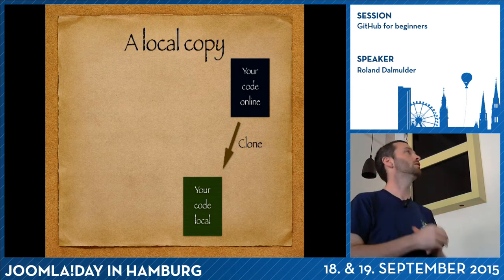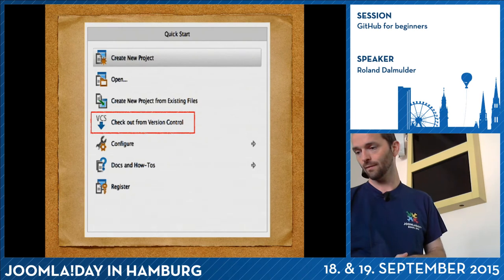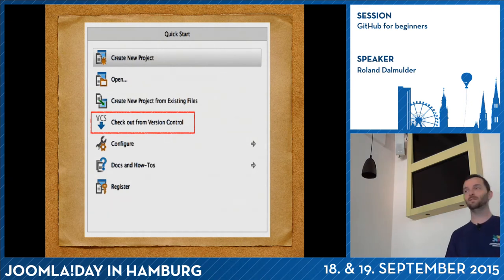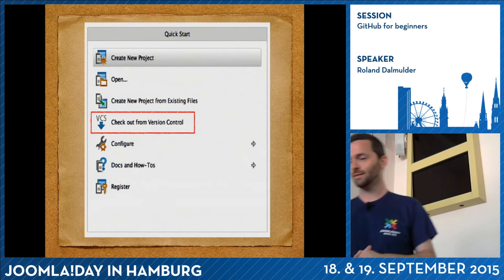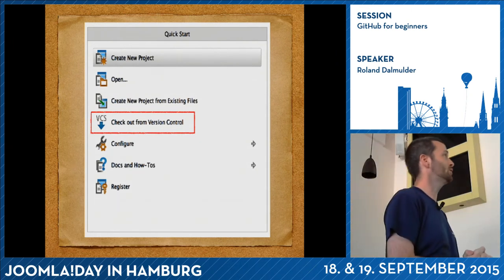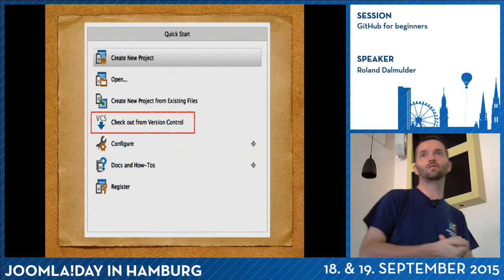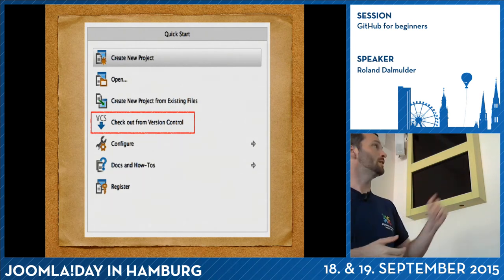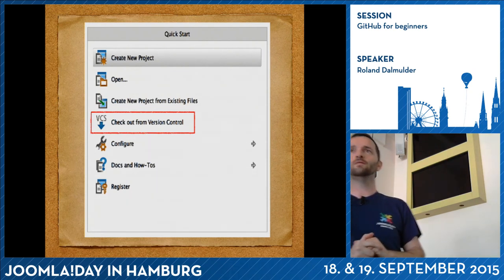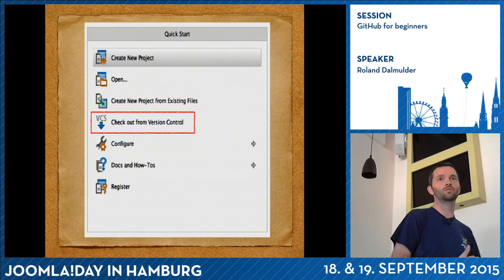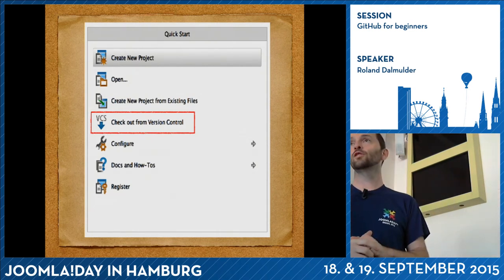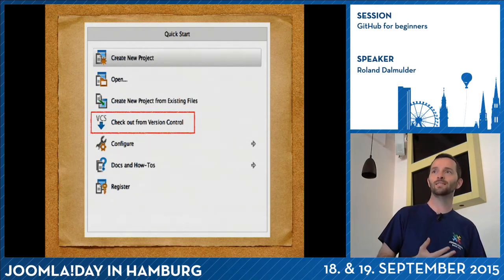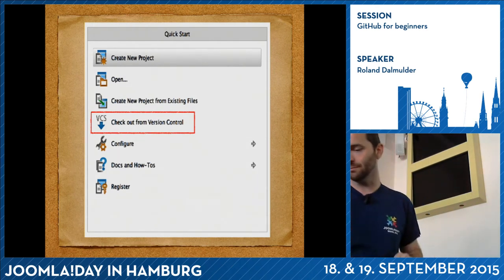This is a screenshot from PHPStorm, today my favorite editor, also used by many people in the Joomla project. When you start PHPStorm you get a quick start screen — not very different from many other IDEs — and we're going to choose 'Checkout from Version Control' because Git is a version control system. Before we had SVN, CVS, Mercurial, and some others.